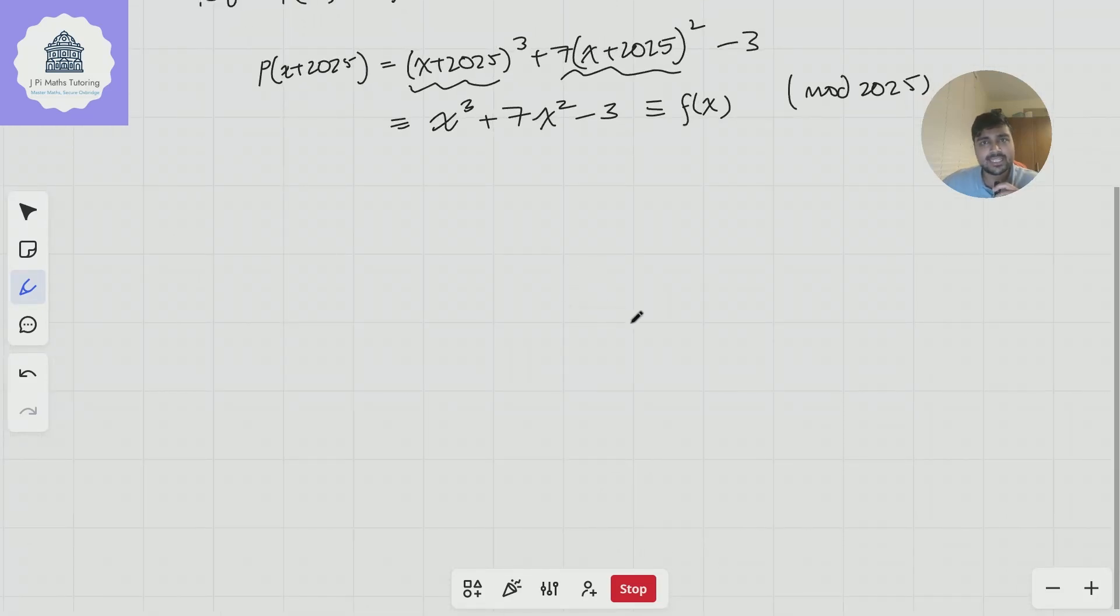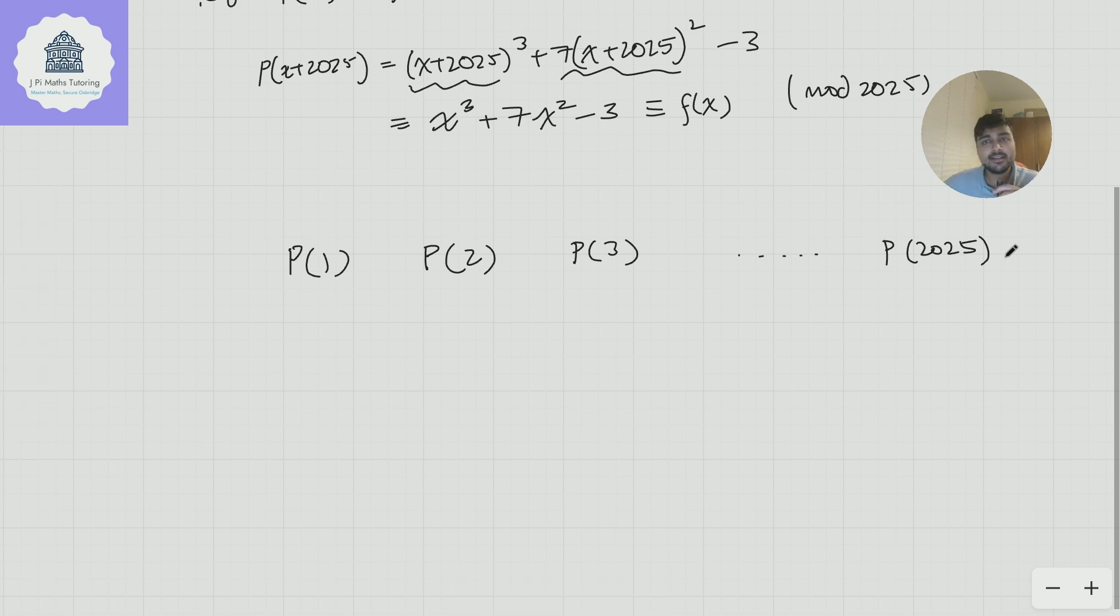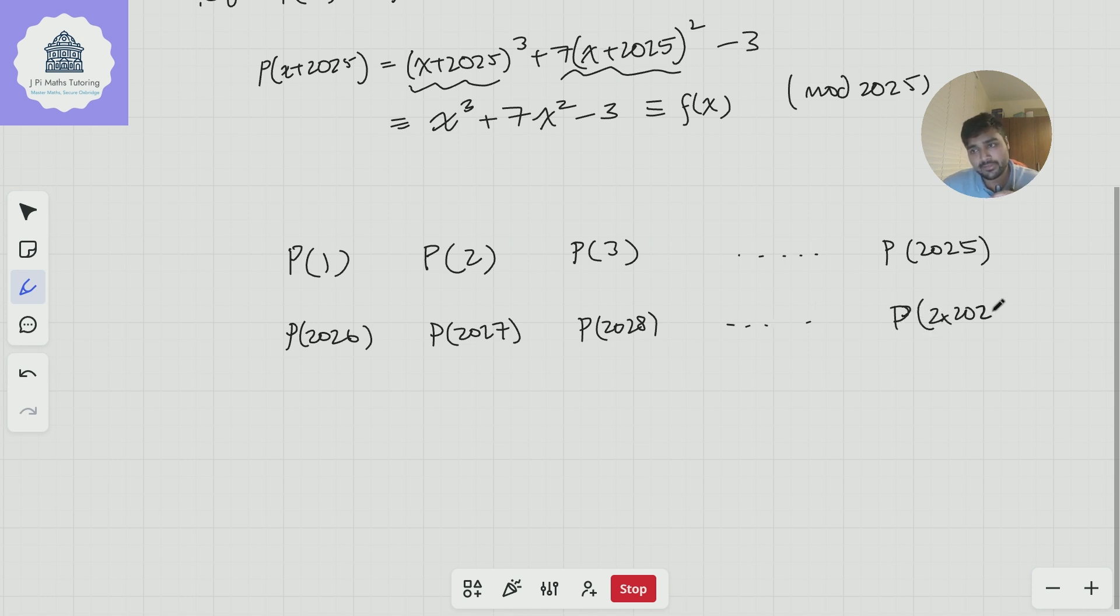So the idea here is we're going to create a table. So I'm going to write the value of p of 1 there. I'm going to write p of 2 there. Then p of 3 here. And I'm going to keep going until I get to p of 2025. There's my first row. Then underneath that, I'm going to just keep going. So p of 2026, p of 2027, p of 2028, and so on, up to p of 2 times 2025, which will be 4050.